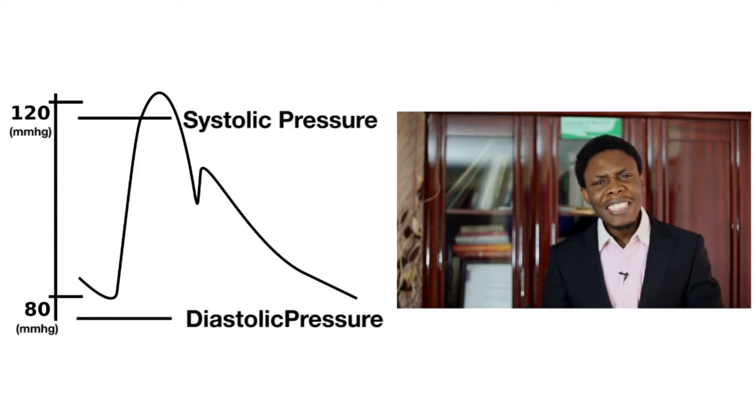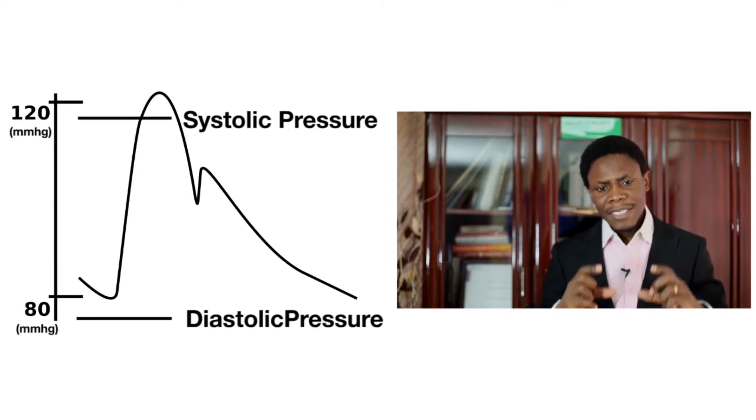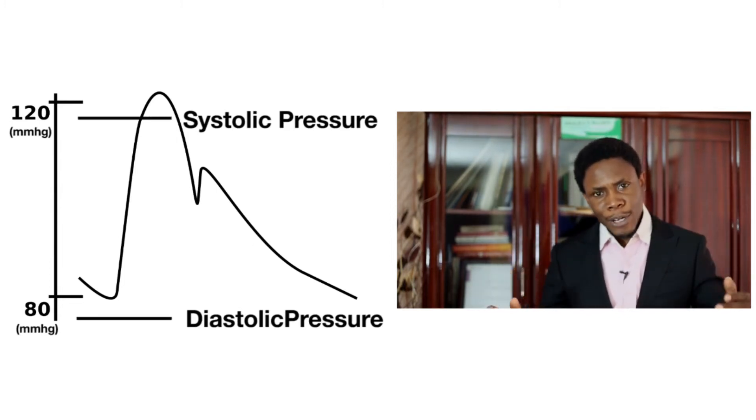What does 120 mean? The reading on top — the larger reading — is simply what we call systolic pressure. Systolic pressure is the pressure in your cardiovascular system, in your circulatory system, in the pipeline system that takes blood around your body. The systolic pressure is the pressure when the heart is contracting.